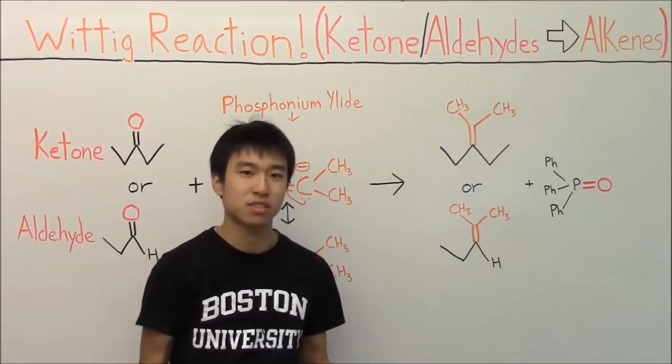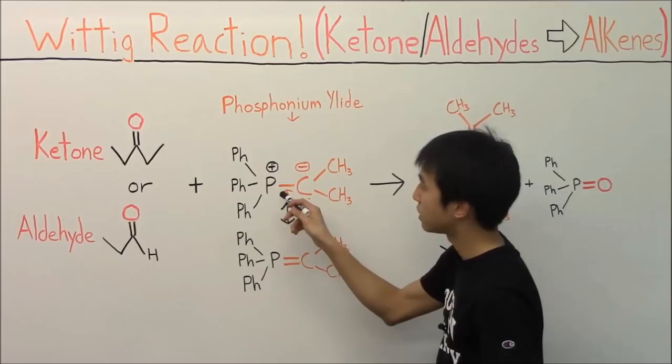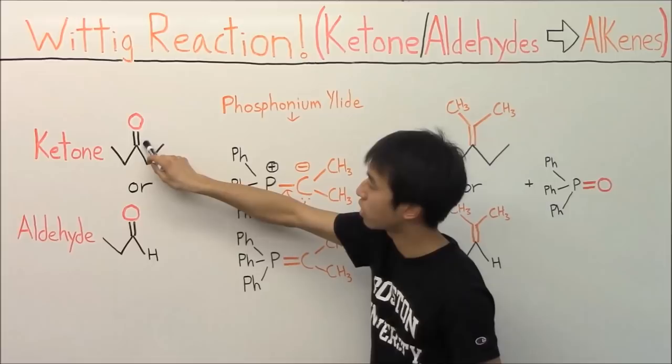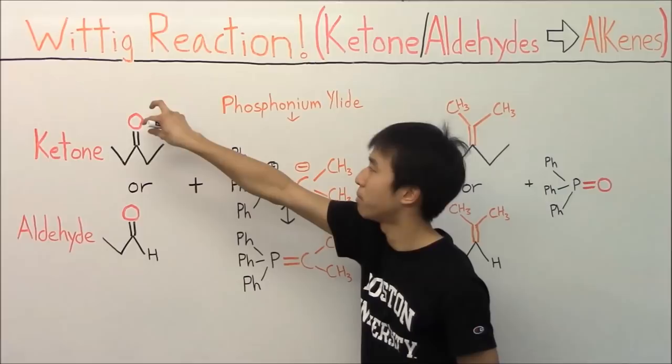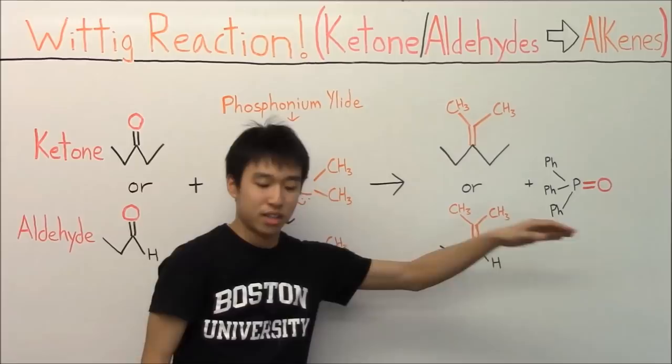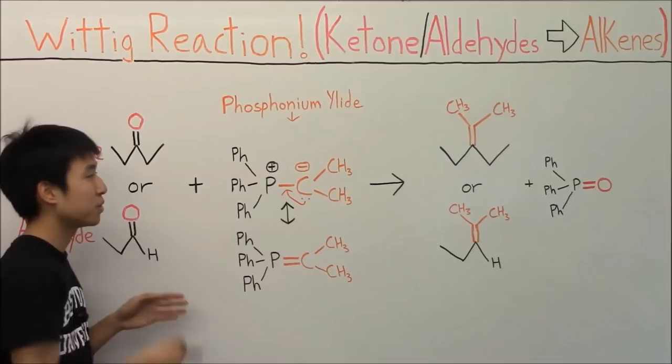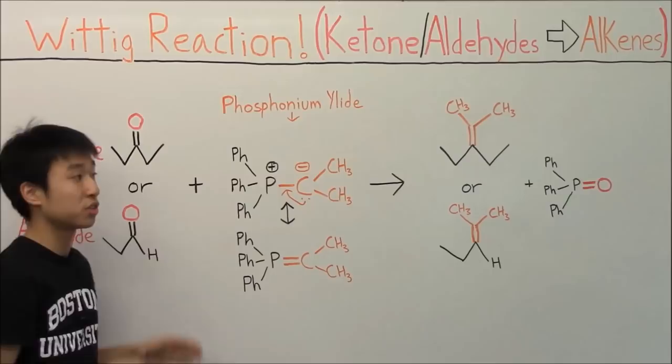The way I think about the Wittig reaction is that we're essentially just using the phosphonium ylid to sneak this carbon chain onto the carbon right here, and use the phosphorus to trick the oxygen and kidnap it — that's why it ends up in the final product as phosphine oxide. So the bottom line is that in the Wittig reaction you're using the phosphonium ylid to pluck off the oxygen and sneak on a carbon to where the oxygen used to be.